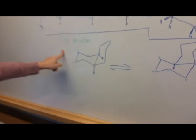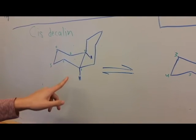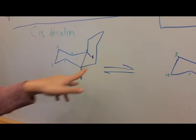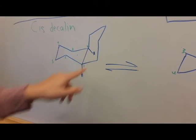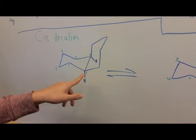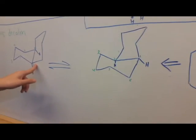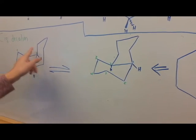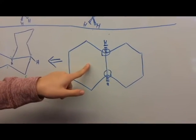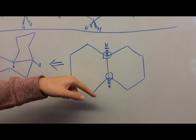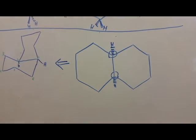Cis-Decalin, on the other hand, has the hydrogens pointing both down. However, you can see that they are not both axial. One of them is axial while the other is equatorial. And if you do the chair interconversion, you can see that the one carbon corresponds to the one carbon here. And here is the line and wedge representation in which you can see that both are dashed, mentioning that they are coming in the same direction.